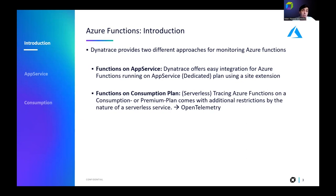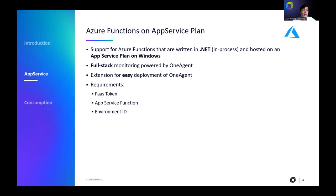Both of them can be instrumented and monitored using Dynatrace. First, we'll begin with Azure Functions running on App Service Plan. We support monitoring Azure Functions written in .NET and hosted on an App Service Plan running on a Windows host. If your function meets these requisites, you can instrument it using full stack monitoring powered by one agent.